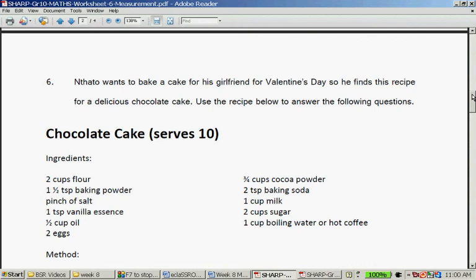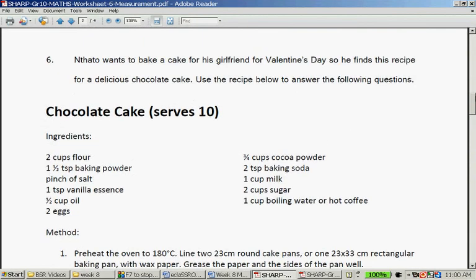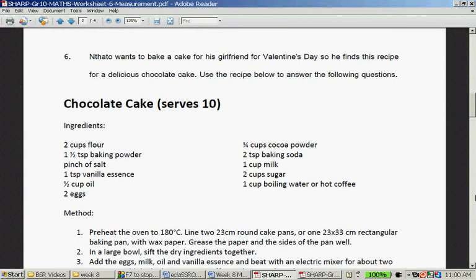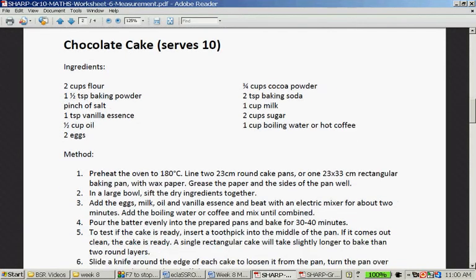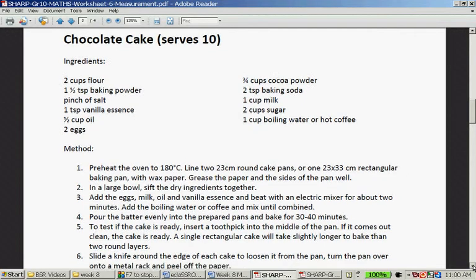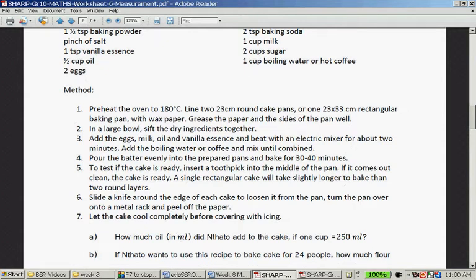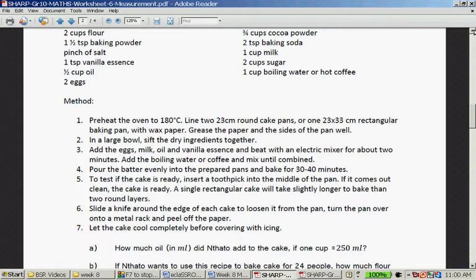Question six is a cake. Tata wants to bake for his girlfriend on Valentine's Day. This is the cake, it's all the ingredients. I hope it works, it looks like a delicious cake. And that's the method. How much oil did Tata put in the cake if one cup is equal to 250 milliliters? A half a cup of oil. So you go 250 divided by 2 is 125 milliliters of oil.